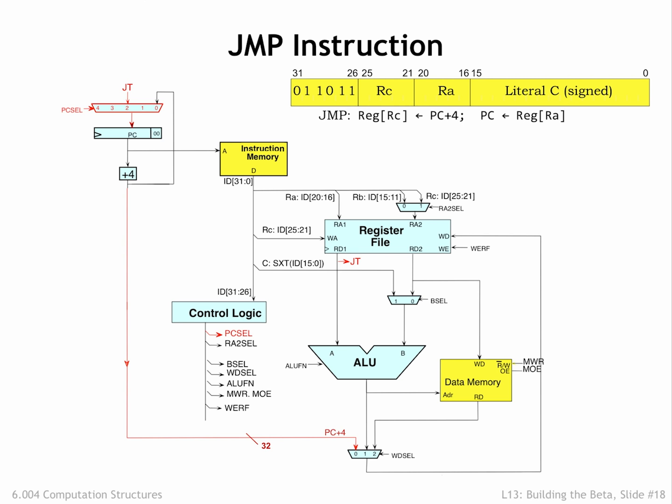The jump and branch instructions also cause the address of the following instruction, in other words the PC plus 4 value, to be written to the RC register. When WD cell is 0, the 0 input of the WD cell mux is used to select the PC plus 4 value as the writeback data.